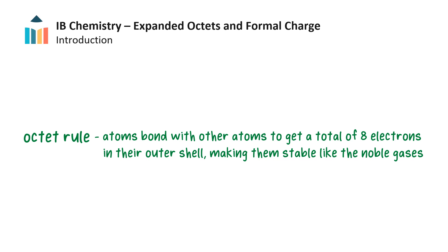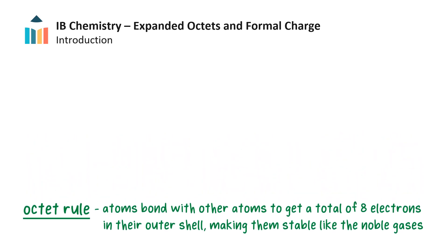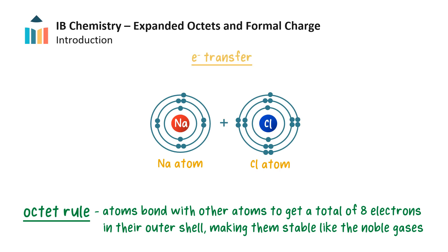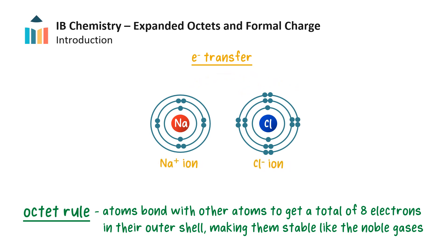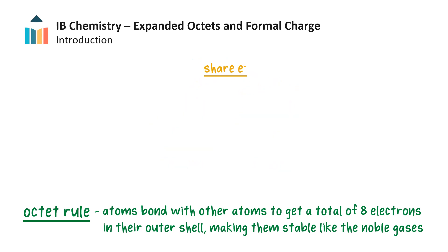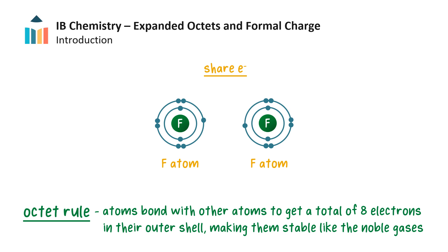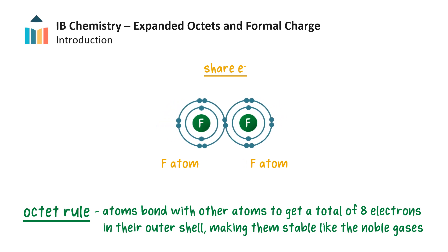We have already learnt about the octet rule, which says that main group elements react to obtain 8 electrons in their valence shell. They do this in one of two ways: they can either undergo electron transfer by losing or gaining electrons to form ions, or they share electrons and form covalent bonds so each atom ends up with 8 electrons in its valence shell, giving it the same stable electron configuration as a noble gas.